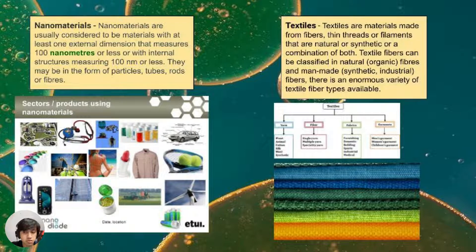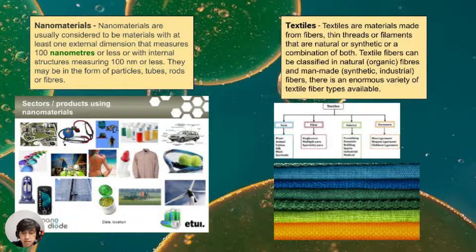Nanomaterials measure about 100 nanometers and are usually used in tubes, rods, and fibers — like the materials we use in our clothing every day. Next are textiles, which are materials made from fibers.